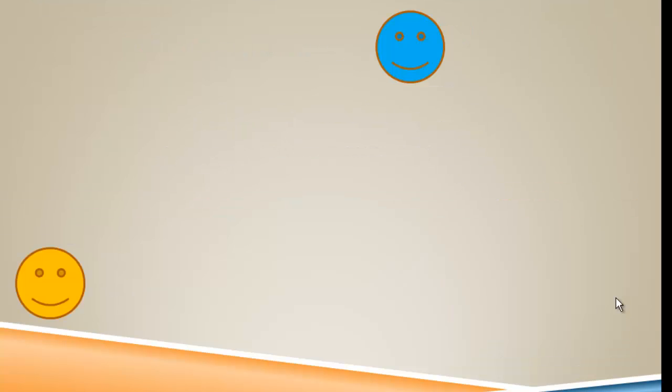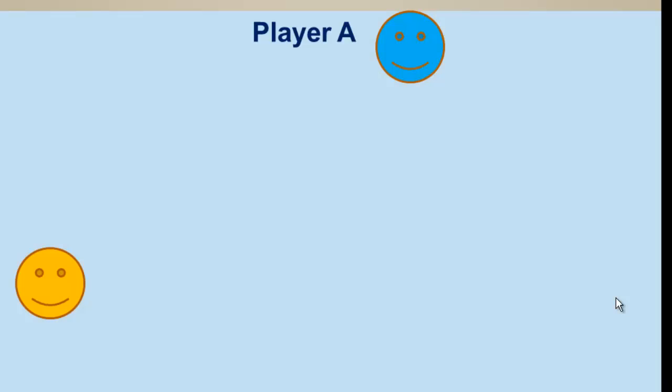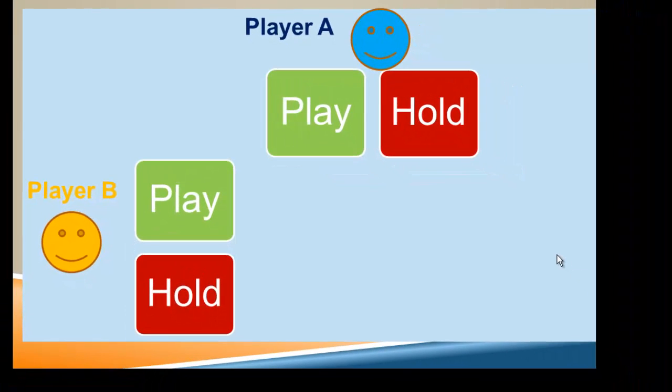We're going to take a card game approach and just have two players. This is the simplest possible card game. There's only two options to each player: Player A can play or hold, and player B can play or hold.